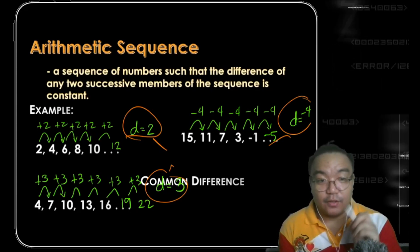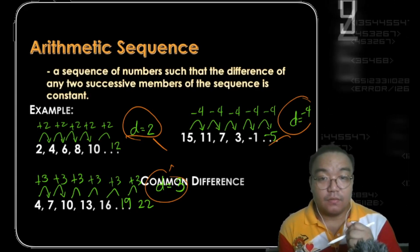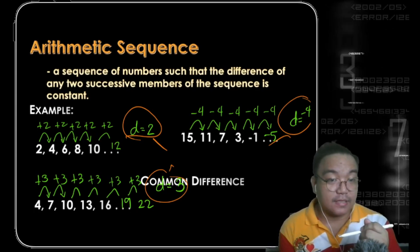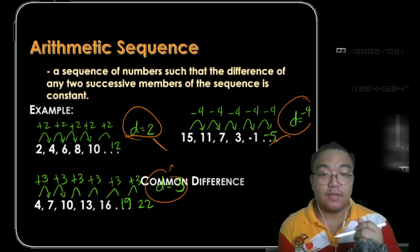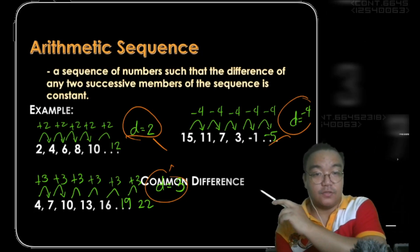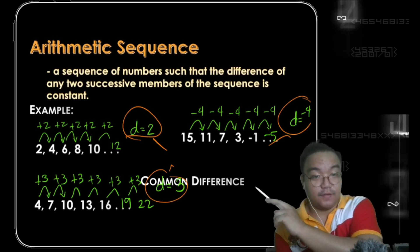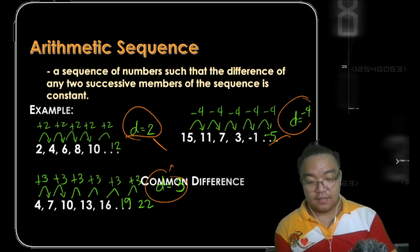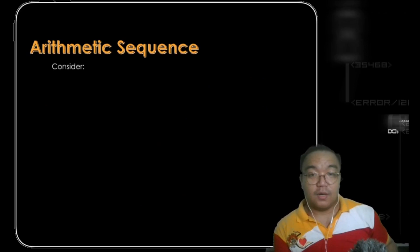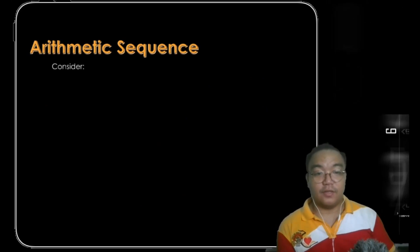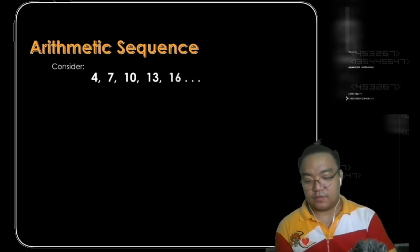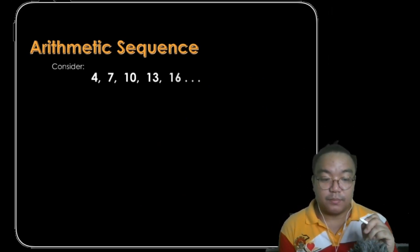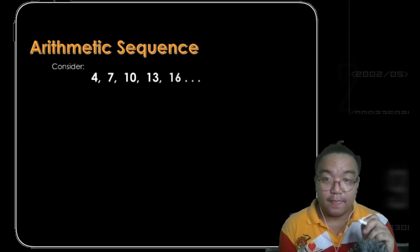So in order to know if a sequence is an arithmetic sequence, the terms should have a common difference. Let's talk more about arithmetic sequences using our second example — the sequence 4, 7, 10, 13, 16.